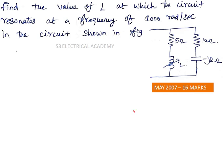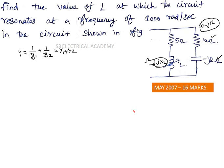For this type of problem, find the admittance of the circuit. The total admittance Y equals the admittance of the first leg plus the admittance of the second leg, that is Y1 plus Y2, which equals 1/Z1 plus 1/Z2. The first leg has 5 ohm and jXL in series, so Z1 = 5 + jXL. The second leg has impedance Z2 = 10 - j12.